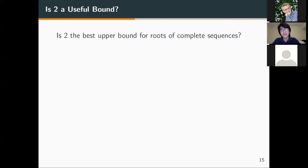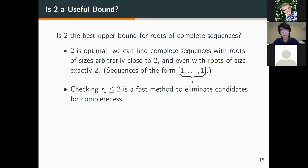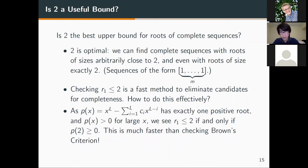We asked ourselves: is 2 the best upper bound for the roots of complete sequences? The answer is yes, because we can find complete sequences with principal roots approaching 2 arbitrarily closely, and even those with size exactly 2. However, this is still a fast method to check whether a sequence is definitely incomplete or possibly complete. We know the characteristic polynomial of a PLRS has only one positive root, so we evaluate the characteristic polynomial at 2, and from there we can determine whether the principal root is less than 2, equal to 2, or greater than 2.